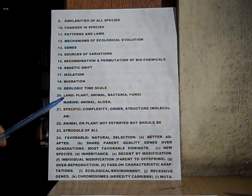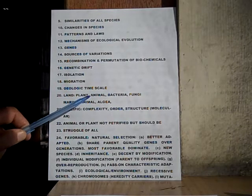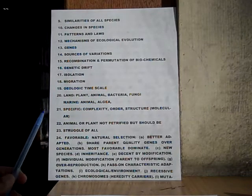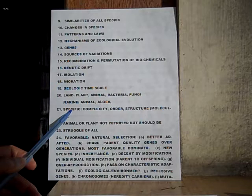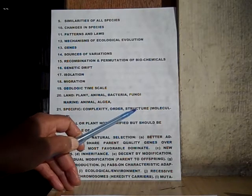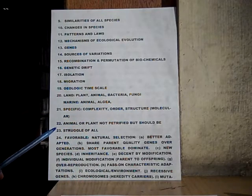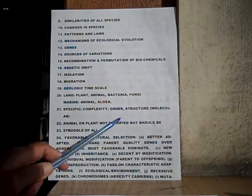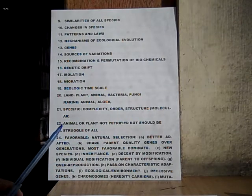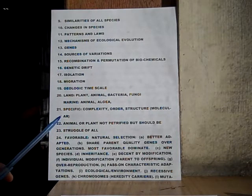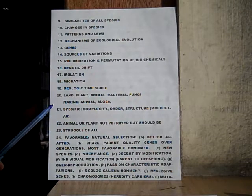Nineteen: geologic time scale. Twenty: land — includes plant, animal, bacteria, fungi; marine — includes animal, algae, and so forth. Number twenty-one: specific evolution — includes complexity, order, structure, molecular, and so forth. Number twenty-two: animal or plant, not petrified but should be. Number twenty-three: this is where you find living material old as can be, but yet it should be petrified but yet it is not.